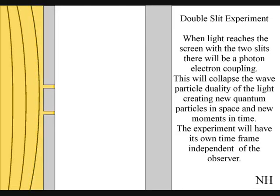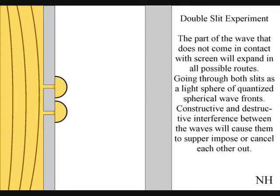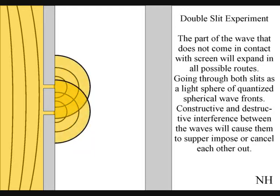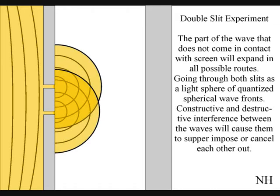When the wave function reaches the screen with the two slits, the photon will react with the electrons of the screen. This will collapse the wave-particle duality of the light, creating new quantum particles in space and new moments in time. The part of the wave that does not come in contact with the screen will expand in all possible routes, going through both slits as two light spheres of quantized wave fronts.